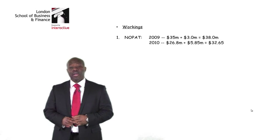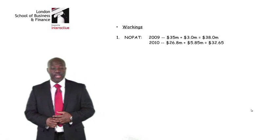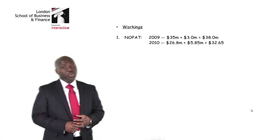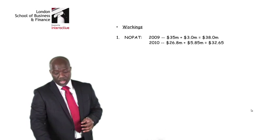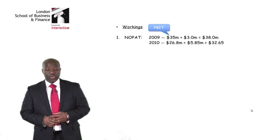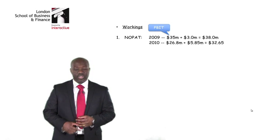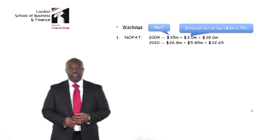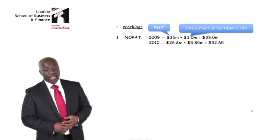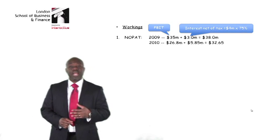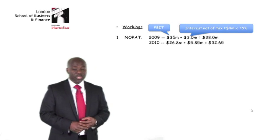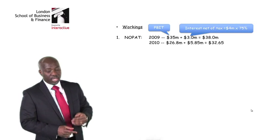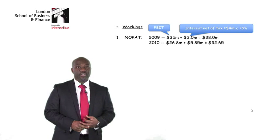I'll show you my workings. To calculate EVA, I first need to calculate NOPAT — net operating profit after tax. The examiner gives me profit before interest and tax. I pick that up and add back interest net of tax, which is 4 million multiplied by 75%, because the tax rate given is 25%. This gives me 38 million in the first year and 32.65 million in the second year.